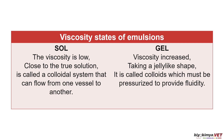Regarding viscosity states of emulsoids: in the sol state, viscosity is low, close to a true solution — it can flow from one vessel to another, like printer ink. In the gel form, viscosity increases, taking a jelly-like shape — the colloid must be pressurized to provide fluidity. A good example is collagen.